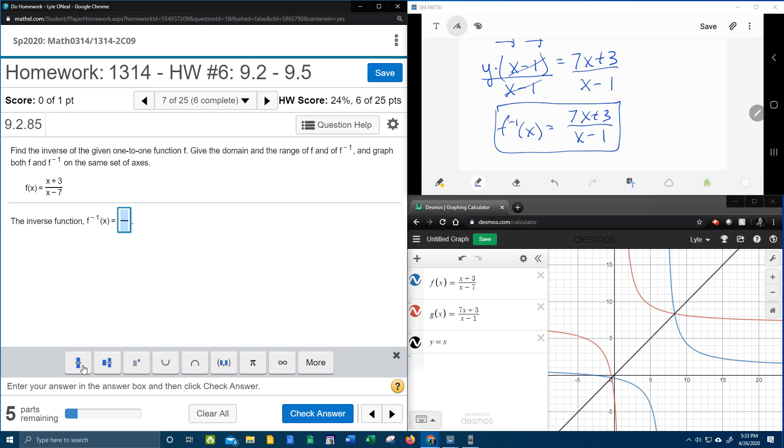In putting that into MyLabMath, we've got 7x plus 3 over x minus 1.